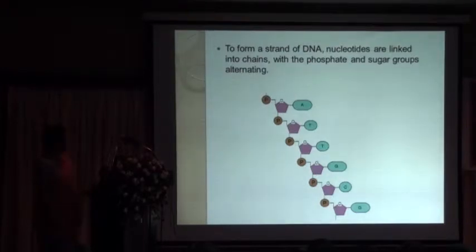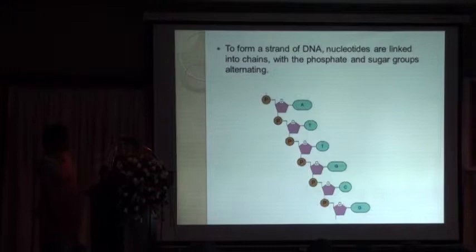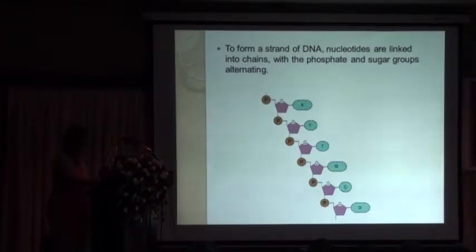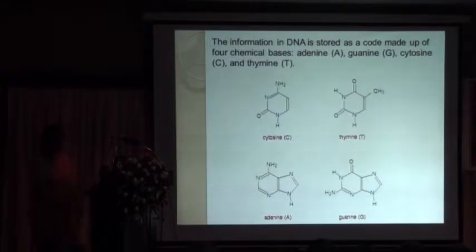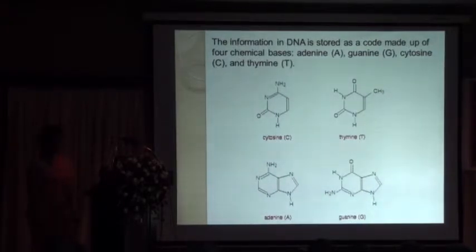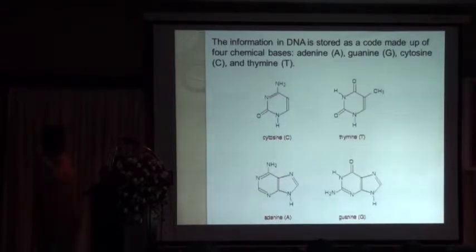DNA forms a strand with nucleotides linked into chains, with the phosphate group, nitrogen base, and sugar all arranged alternately. When we come to the nitrogen bases, there are four types: adenine, guanine, cytosine, and thymine.